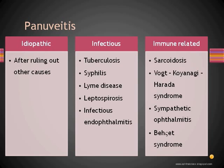Among the immune-related causes, sarcoidosis is a major differential diagnosis. Others include Vogt-Koyanagi-Harada syndrome, sympathetic ophthalmitis, and Behçet's syndrome. VKH disease and sympathetic ophthalmitis are like sister diseases — very similar to each other. Sarcoidosis and tuberculosis also present very similarly. These are the common causes of pan uveitis.